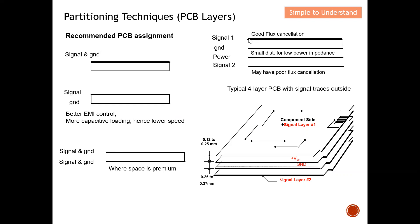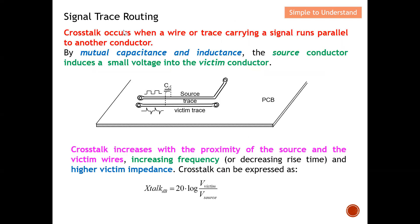For a four-layer PCB, we can dedicate the first layer to house all components and signals. The second layer can be all ground. The third layer can be all power, and the last layer can carry signal traces again. In a 3D view, the first layer is the signal and component side, the second layer is VCC, the third is ground, and the last layer routes signal traces. This is how we partition our PCB to have a better chance of passing EMC tests.